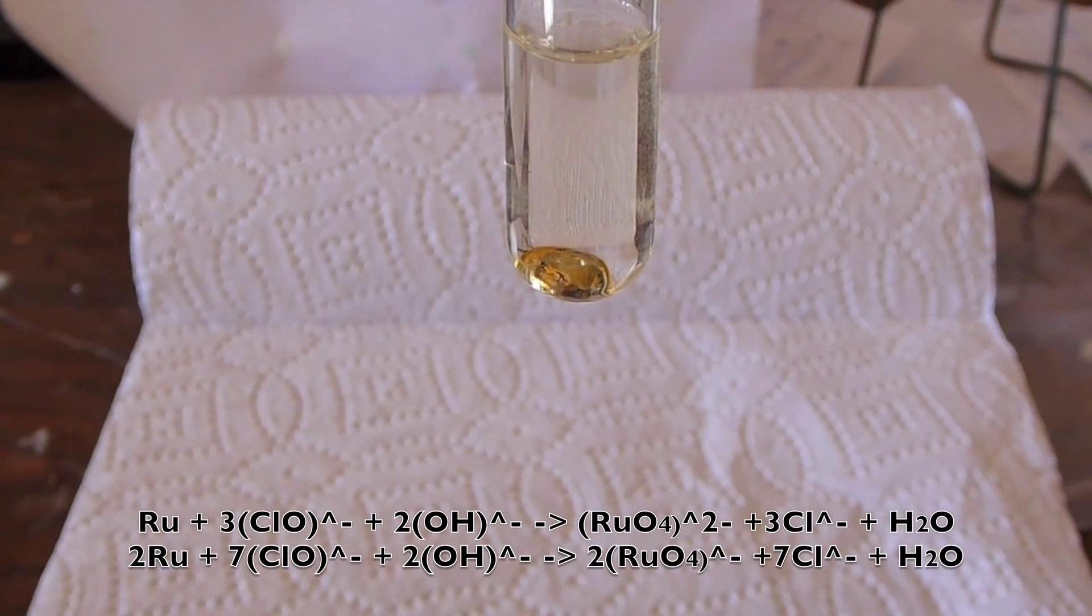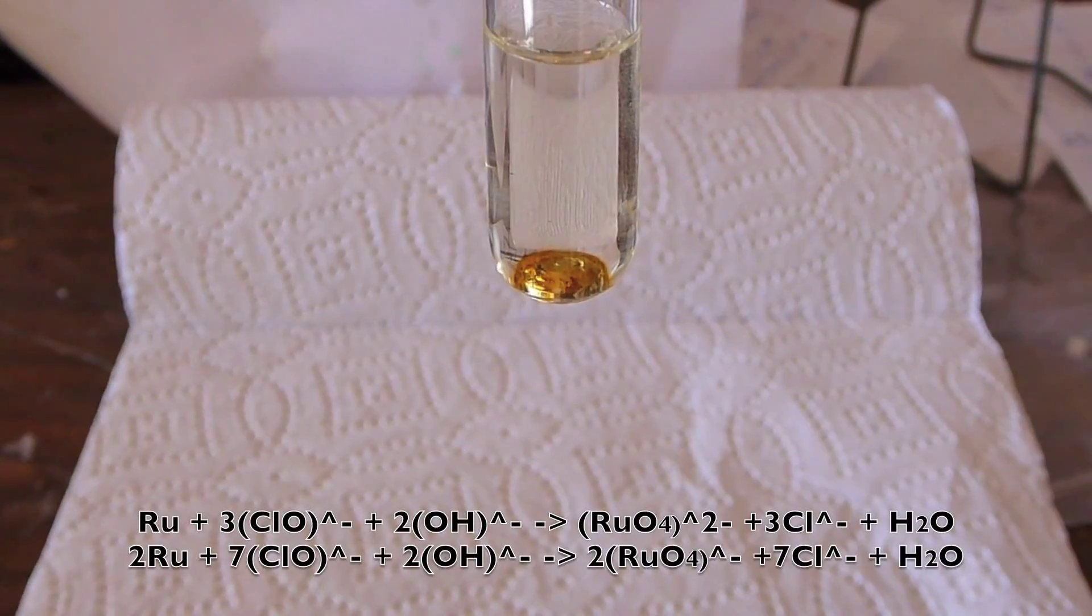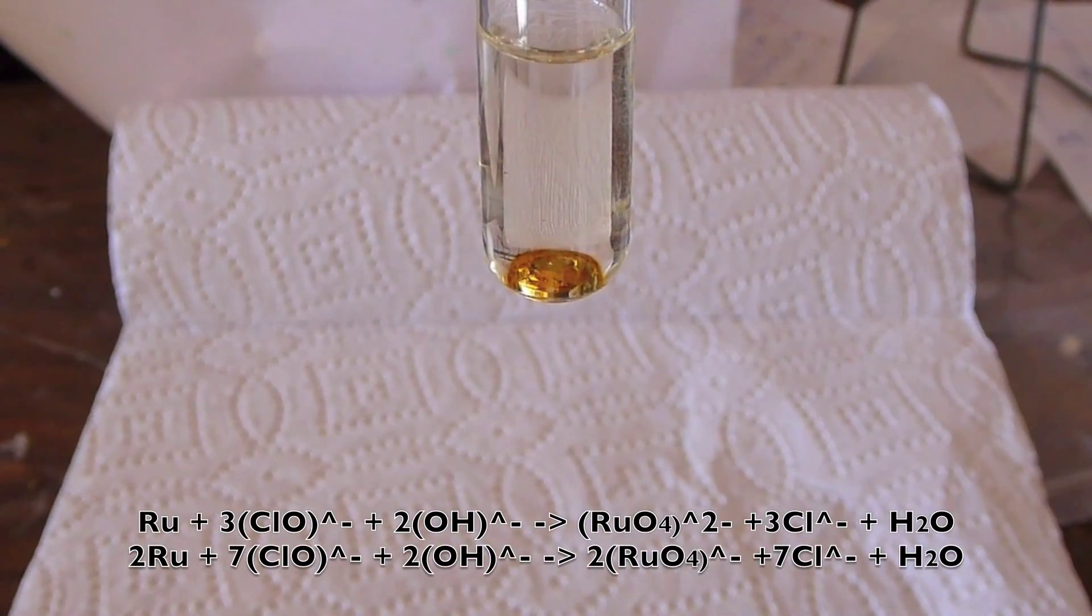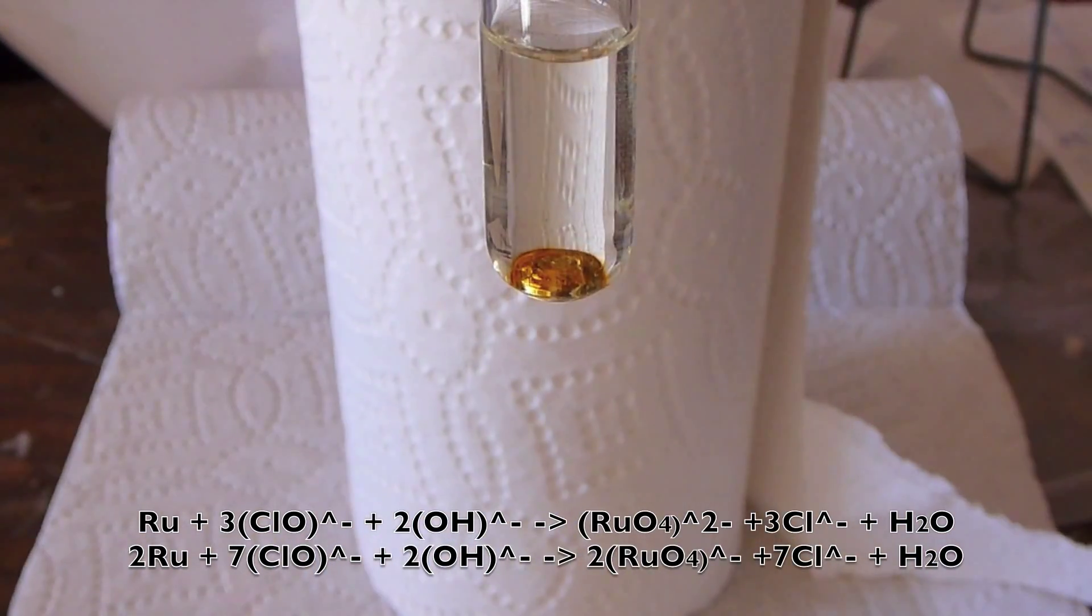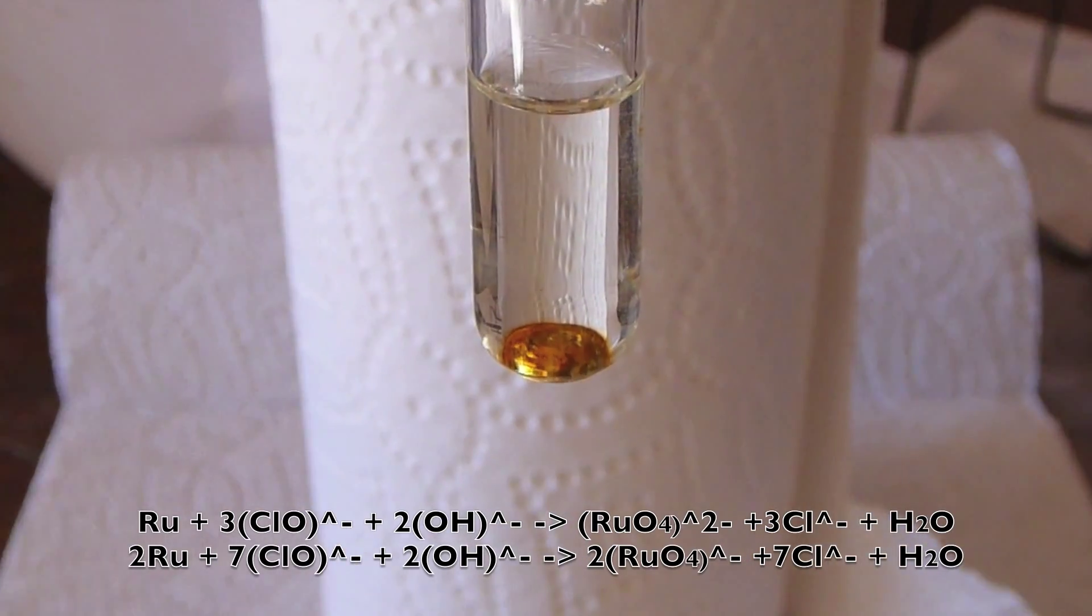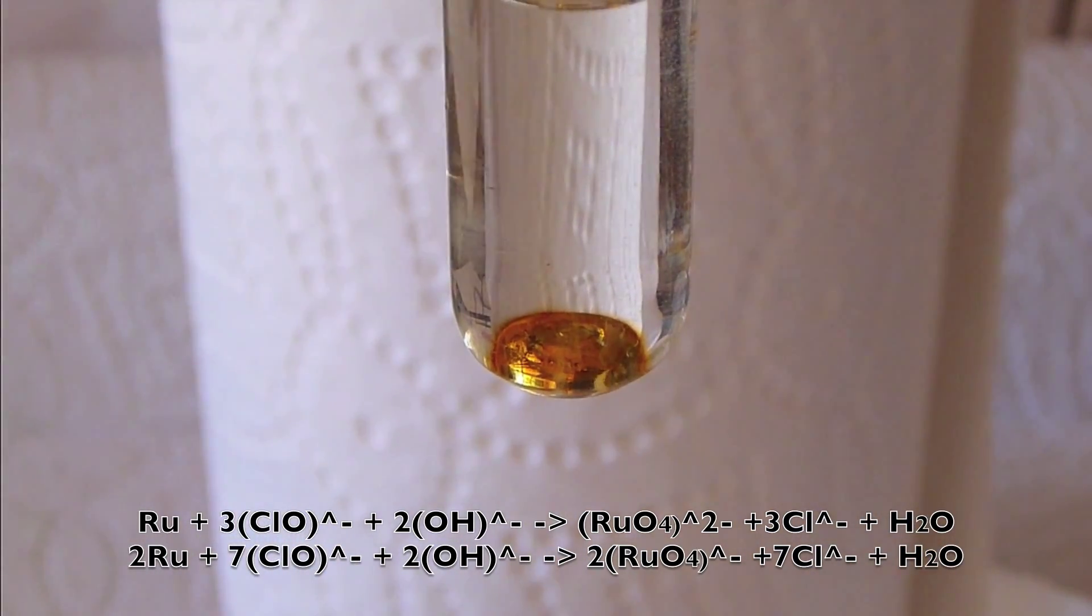The plus 6 oxidation state is in the form of the ruthenate ion. In the plus 7, the perruthenate. At room temperature, this reaction proceeds very slowly, so I'm going to start heating it up. But already, even without heating, you can see a little bit of a red around the ruthenium. That's a mixture of ruthenate and perruthenate.